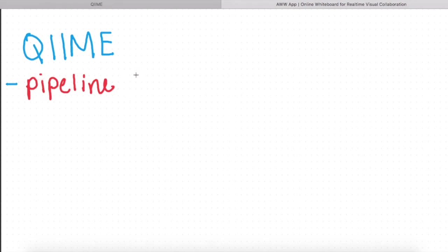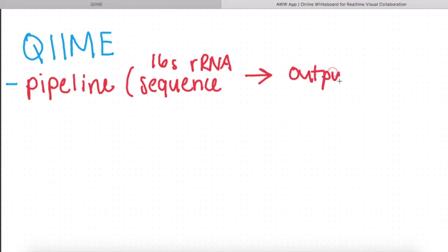A pipeline essentially is where you take your genetic sequence. In our case it was 16S ribosomal RNA sequence and retrieve outputs. That's essentially what a pipeline is and that's what QIIME is.